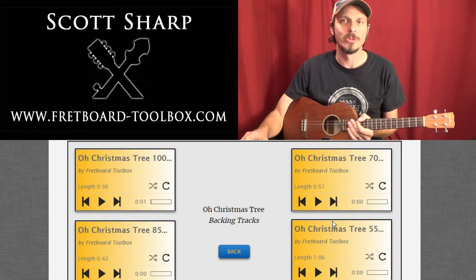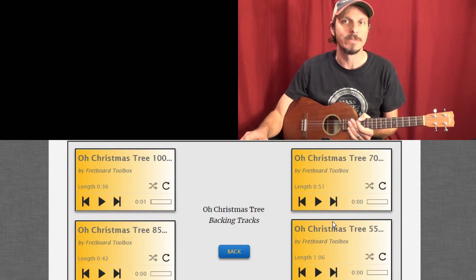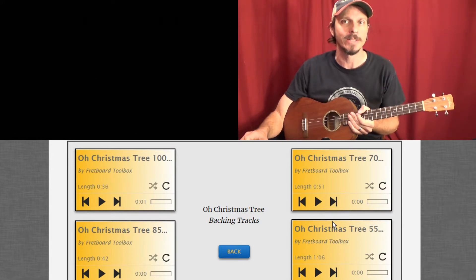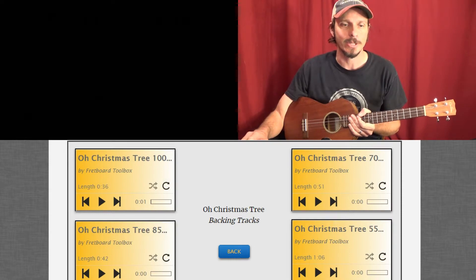Hi everybody, this is Scott Sharp with Fretboard Toolbox, and today we're going to look at O Christmas Tree in the key of C major on the baritone ukulele. Let's get started and I'll show you how it works.